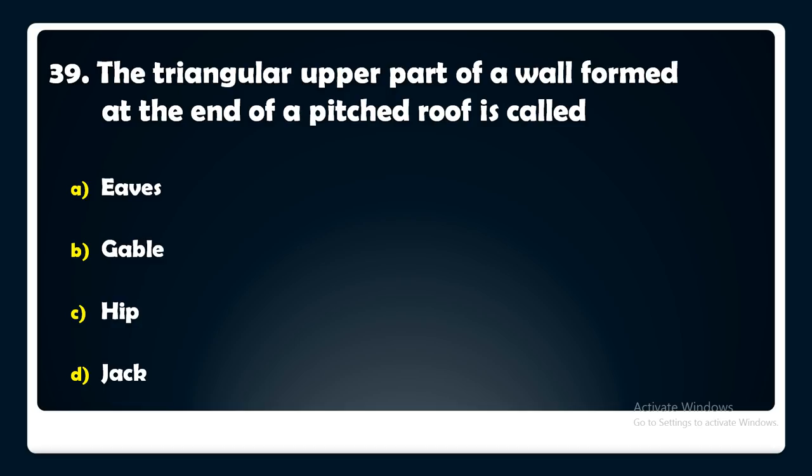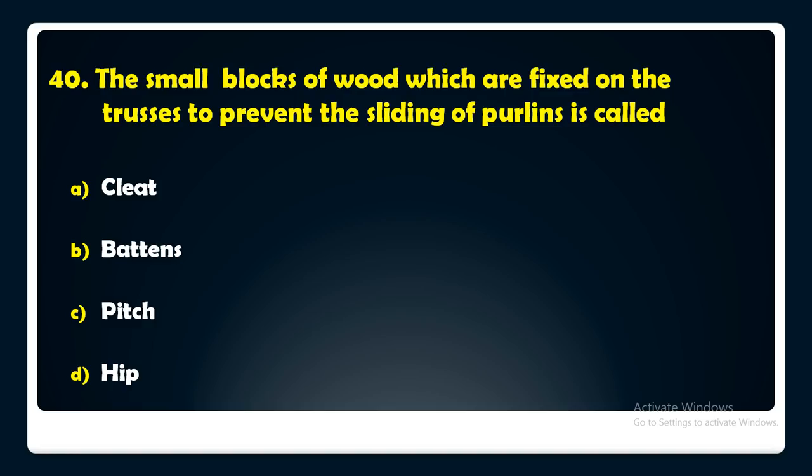The small blocks of wood fixed on trusses to prevent the sliding of purlins are called — cleat, battens, pitch, or hip? The answer is: the small blocks of wood fixed on trusses to prevent the sliding of purlins are called cleats.